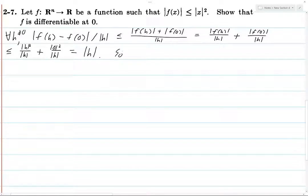Alright, so the limit as h goes to zero of f of h minus f of zero over h. So this inequality holds for every single h not equal to zero, so it holds if you take the limit as h goes to zero. So we get this thing, but this is equal to zero.